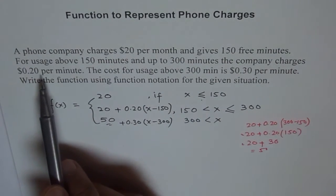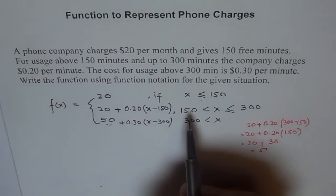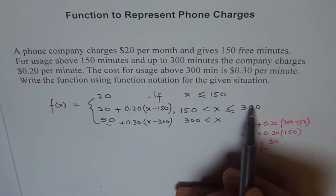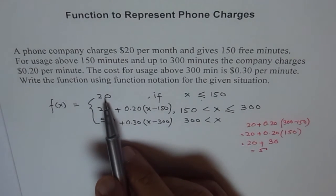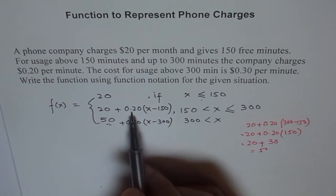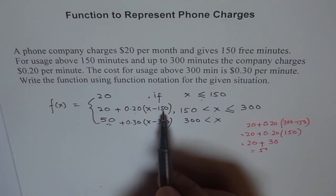For usage above 150 minutes and up to 300 minutes, the company charges 20 cents per minute. So that means in this range, charges will be 20 cents but below this will be $20. So 20 plus 20 cents of anything over 150.